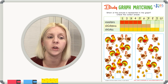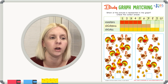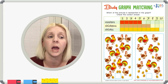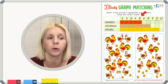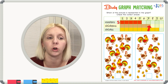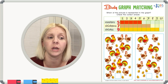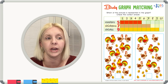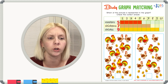First we have to figure out what the graph says, then decide which picture matches. Let's read our graph. Roosters — the bar goes up to five, so I'll write five. Chickens — the bar goes up to seven, so I'll write seven. Chicks — the bar goes up to nine. So before doing anything we read our graph: five roosters, seven chickens, and nine chicks.